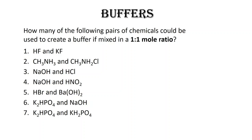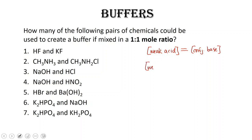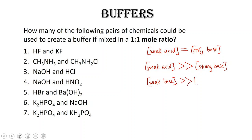Here, we're going to practice looking at buffer solutions. We're going to look at these acid and base pairs to determine if a buffer can be made if we have a one-to-one mole ratio of acid to base. If we have a buffer with a weak acid and its conjugate base, the concentration of the weak acid should be equal to the concentration of the base. If I have a weak acid and a strong base, the concentration of that weak acid must be much greater than the strong base. If I have a weak base, its concentration must be much higher than the concentration of the strong acid making up our buffer.